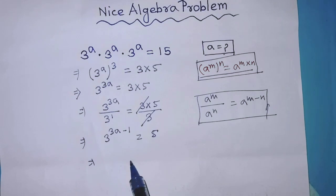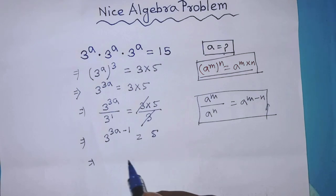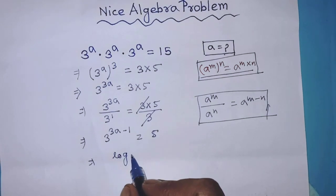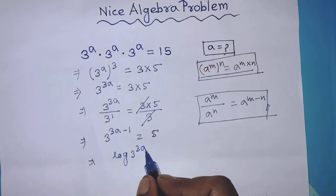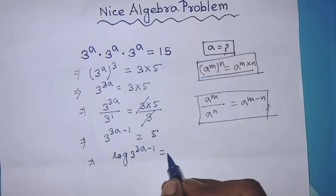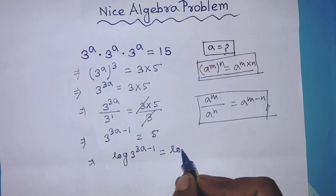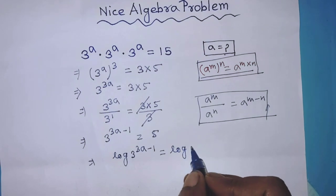Now we have to take log on both sides of this equation. So we can write: log of 3 to the power 3a minus 1 is equal to log of 5.